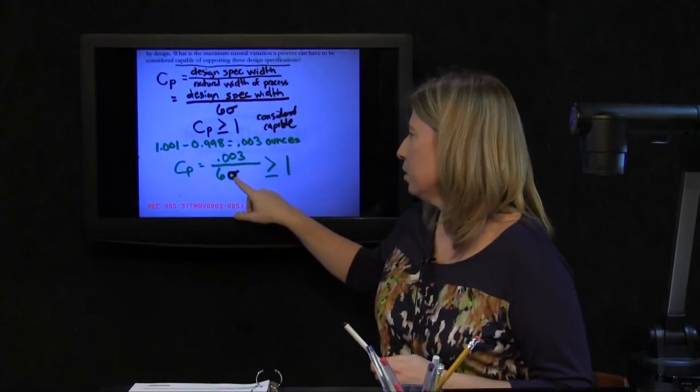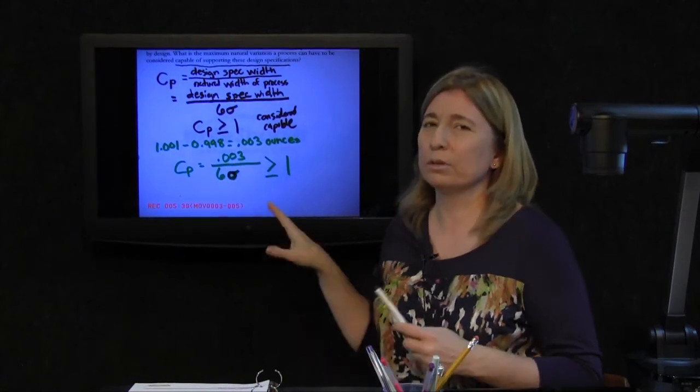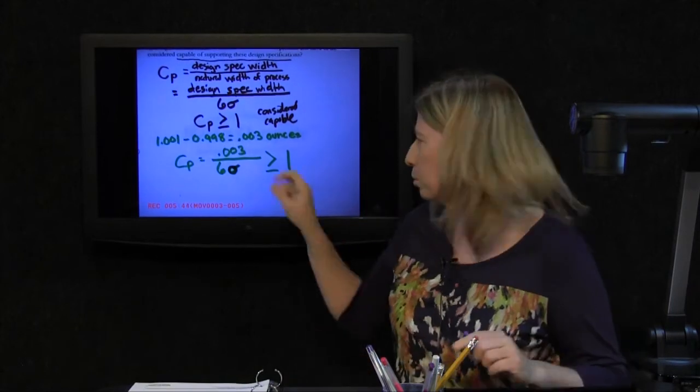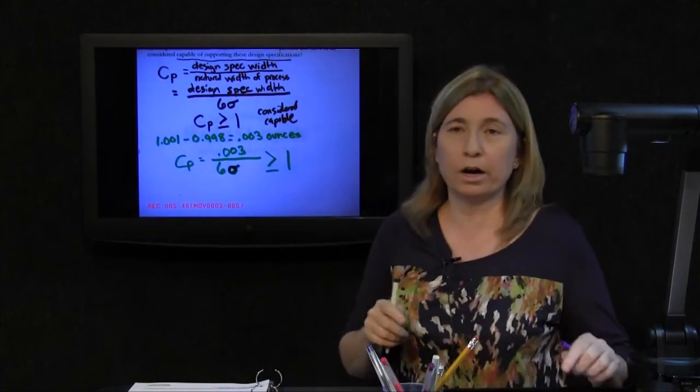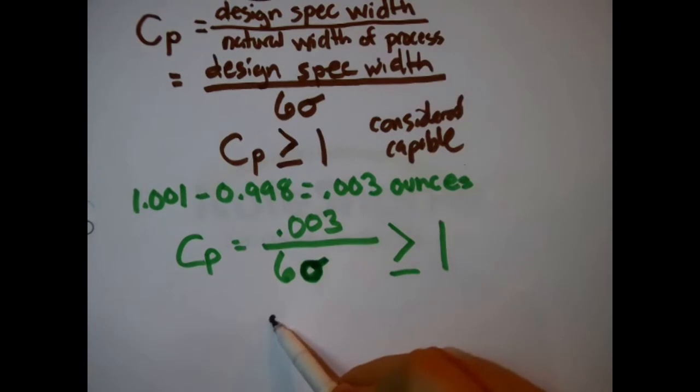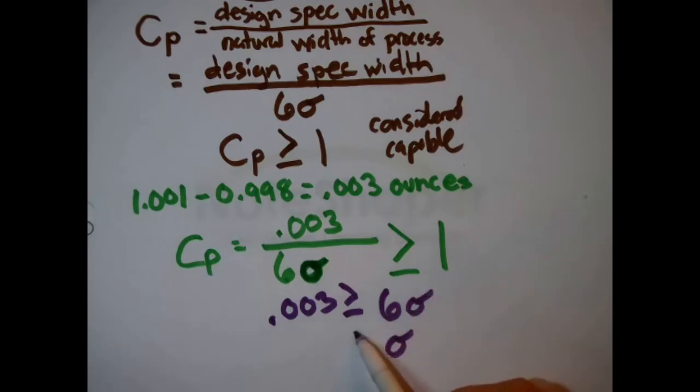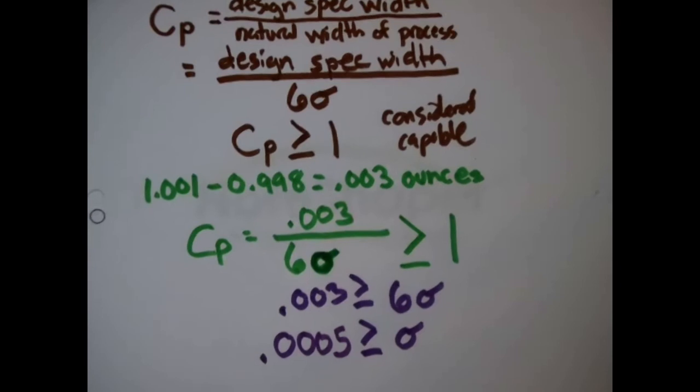What is the most that that number could be such that all this works out happily to greater than or equal to 1? Well, now it just becomes algebra. I could multiply both sides by six sigma. That means that this is when is 0.003 greater than or equal to 1 times six sigma, six sigma, which means that the sigma needs to be less than or equal to... I'm just going to divide both sides by six. So 0.003 divided by six, I get 0.0005. There's your answer.